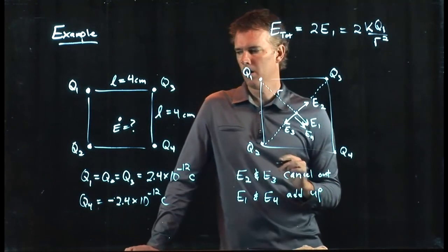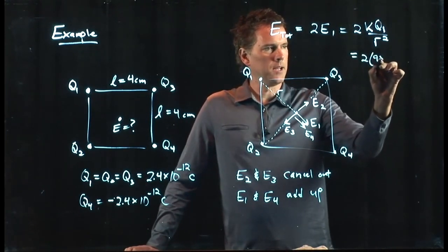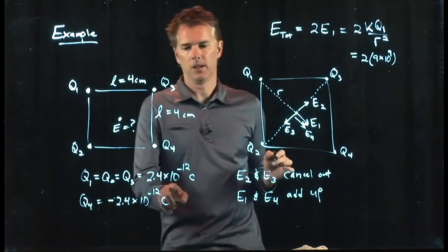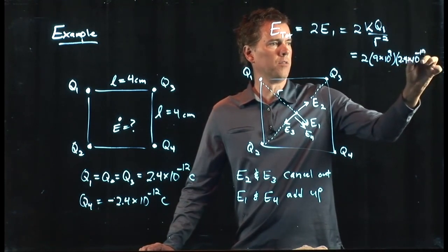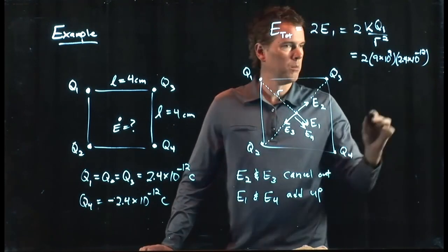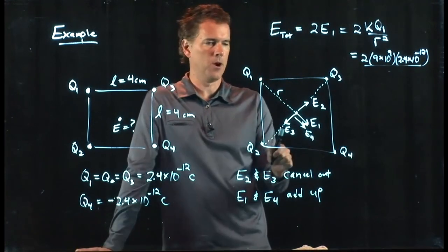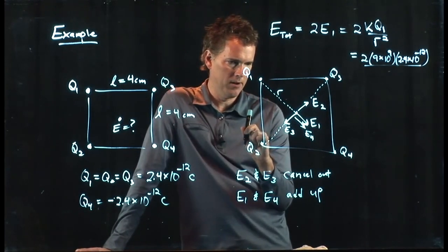And we know k, k is 9 times 10 to the 9. We know q1, it's 2.4 times 10 to the minus 12. And then we've got to divide by r squared. Now we have to be a little bit careful about r here.